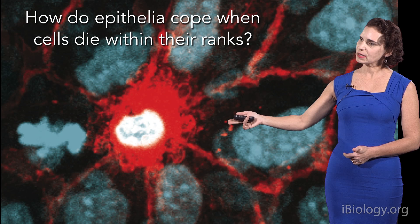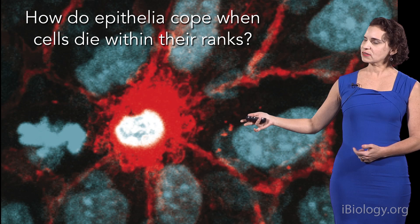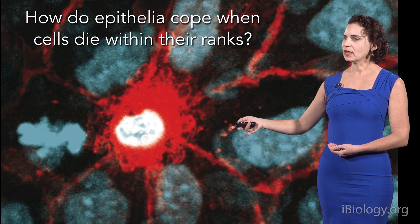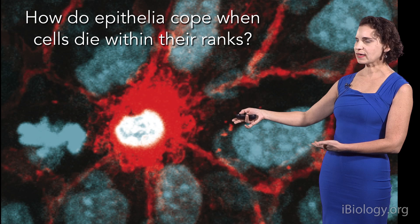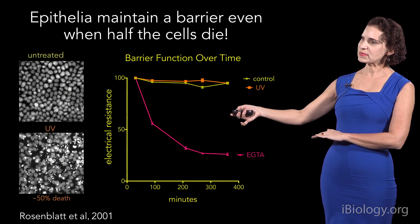To do this, they really need to match the numbers of cells that are dying to those that are dividing, and moreover, we need to understand how epithelial cells can die without disrupting that whole barrier function. The first thing we wanted to understand is whether, if we triggered cells to die, they could maintain a constant barrier, which is their function.